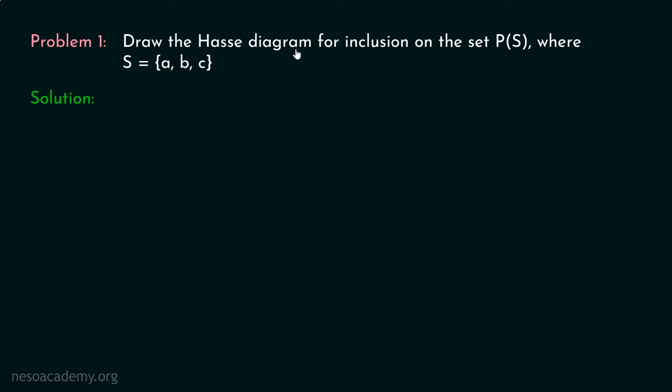Here is problem one: Draw the Hess diagram for inclusion on the power set of set S, where S consists of three elements A, B, and C. So, we want to define the power set of set S. Then we must draw the Hess diagram for inclusion on the power set of set S.